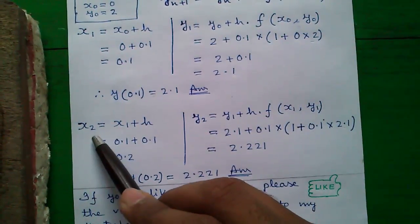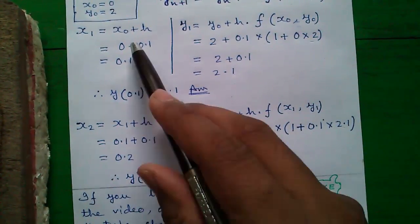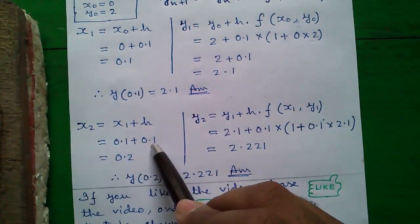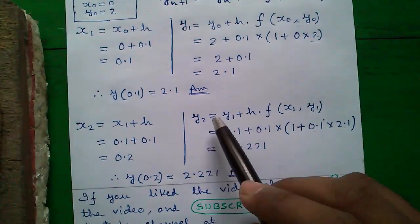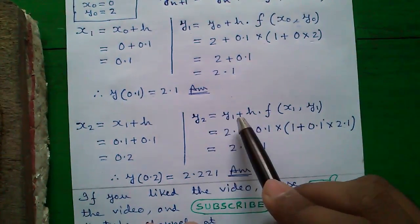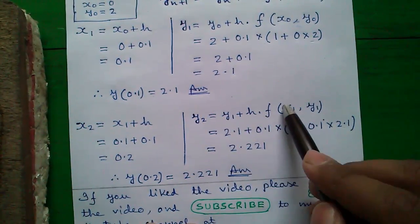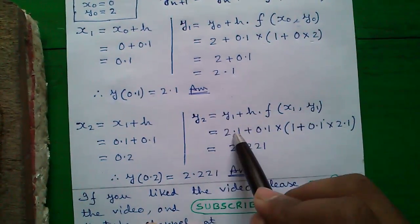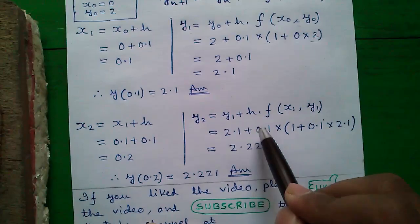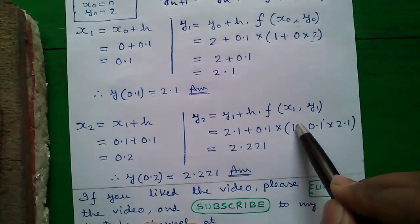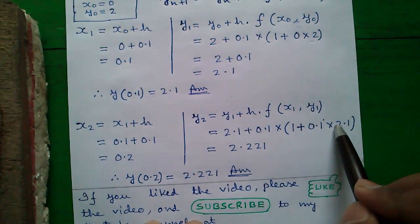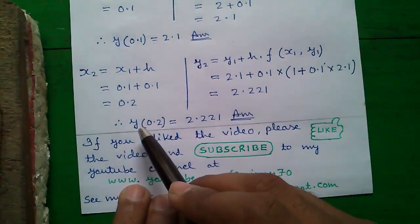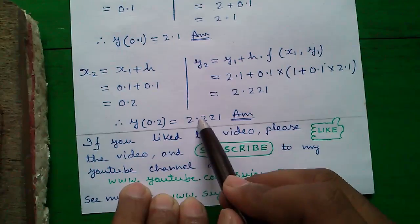Next x_2 equals to x_1 plus h. It will gradually increase. So x_1 is 0.1 plus h is 0.1. So x_2 becomes 0.2. Similarly y_2 equals to y_1 plus h into function of x_1 comma y_1. So y_1 we have already got 2.1 plus h is 0.1 into function is 1 plus x_1 into y_1. So that becomes 2.221. So our second answer is y(0.2) equals to 2.221.